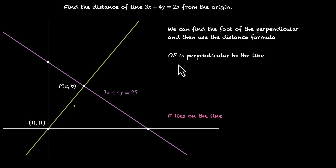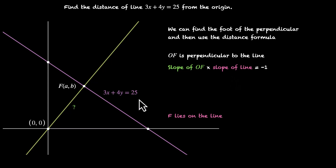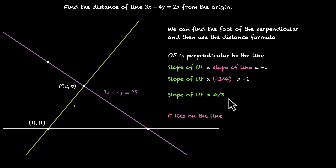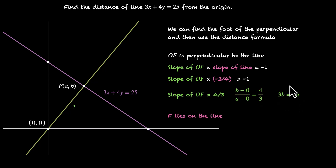OF is perpendicular to this line, which means their slopes are related: slope of OF times slope of the line equals −1. The slope of 3x + 4y = 25 is −3/4. So the slope of OF is the negative reciprocal of −3/4, which is 4/3. This line passes through the origin with slope 4/3. Writing this using coordinates of F: (b − 0)/(a − 0) = 4/3, so cross-multiplying gives 3b = 4a. This is our first equation.